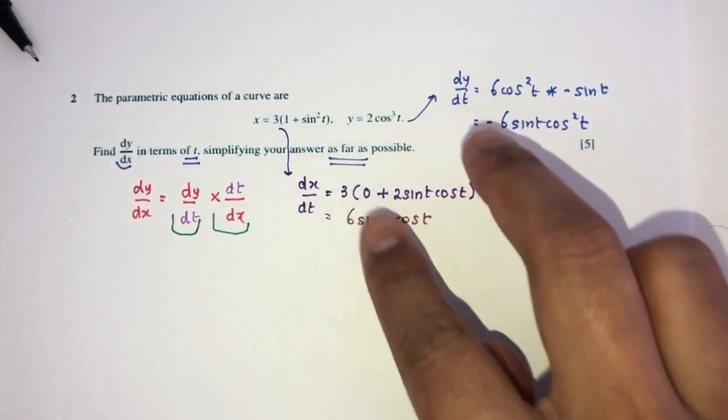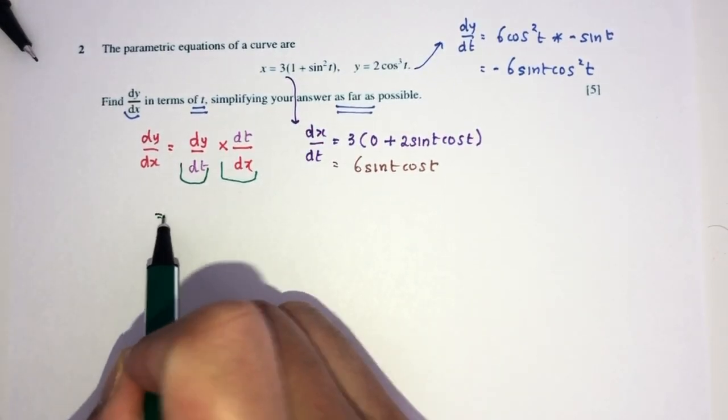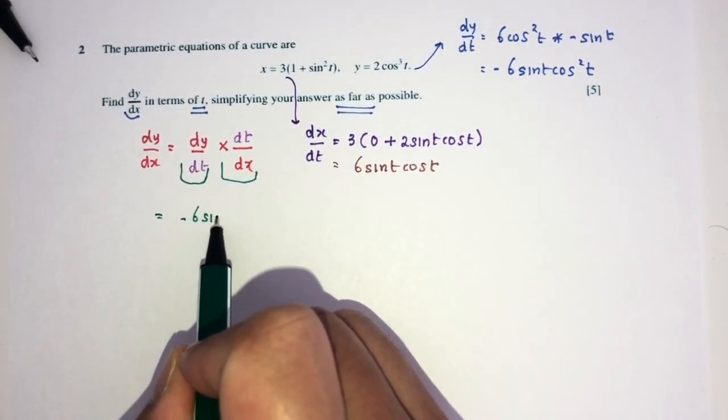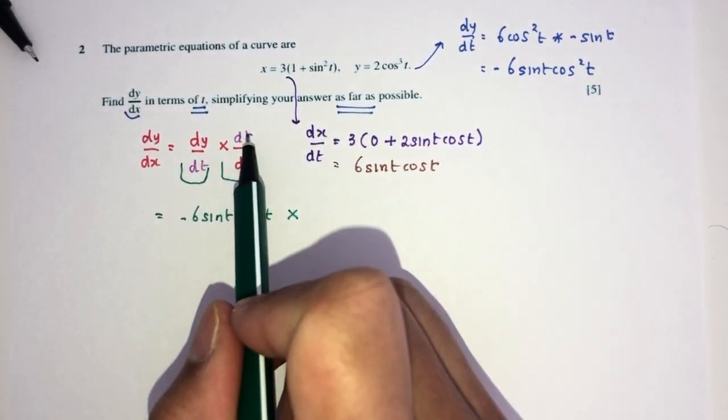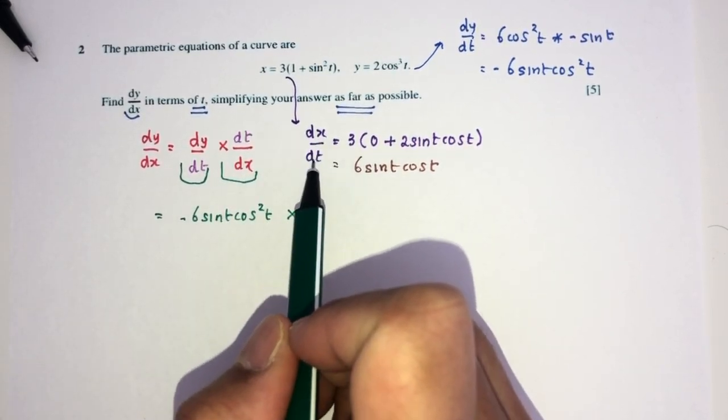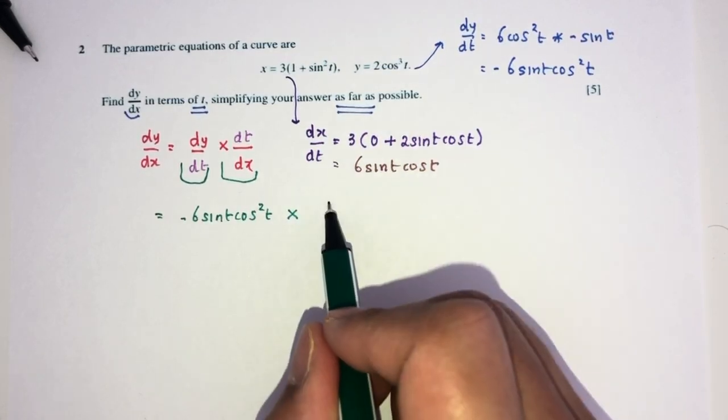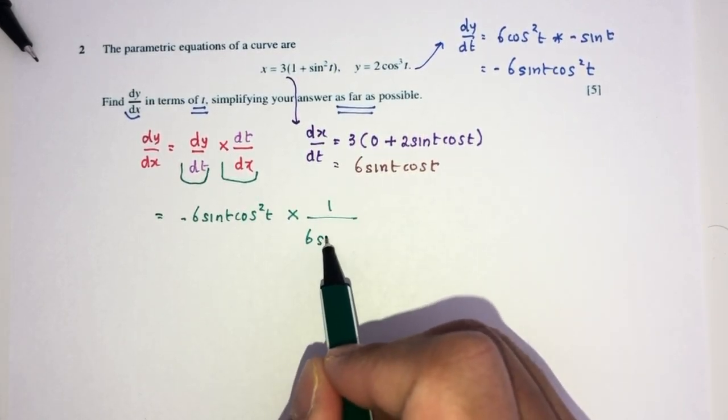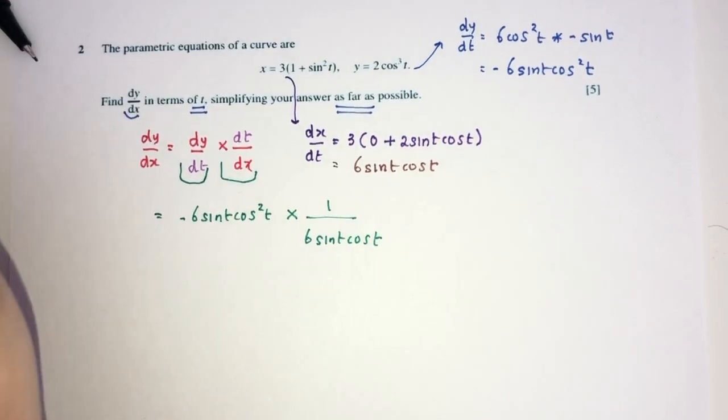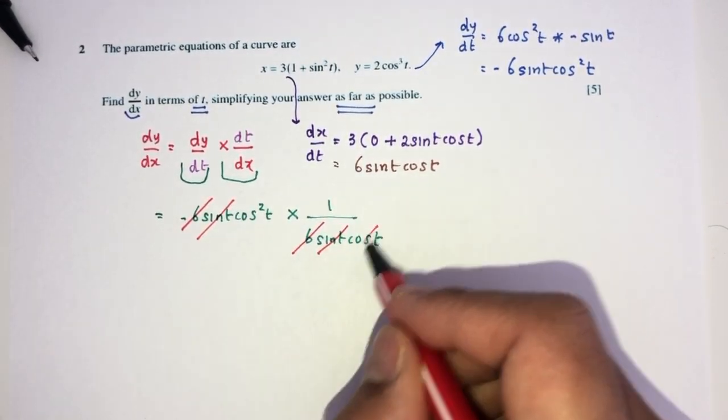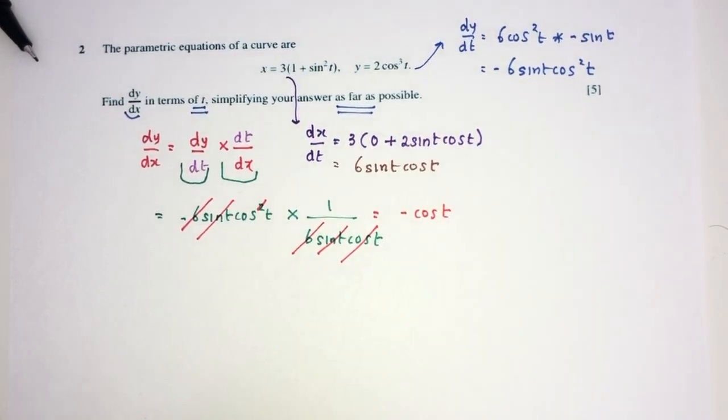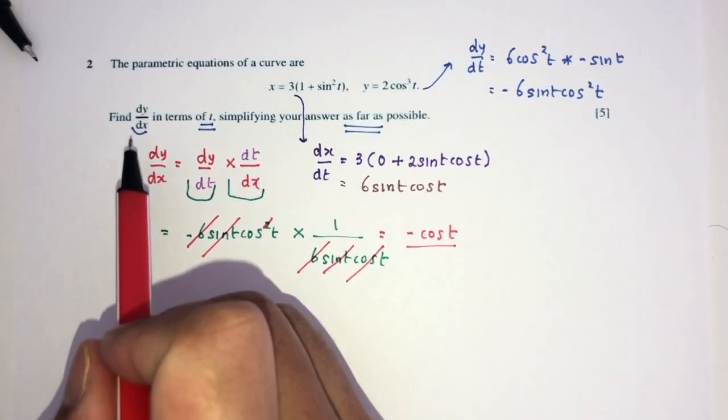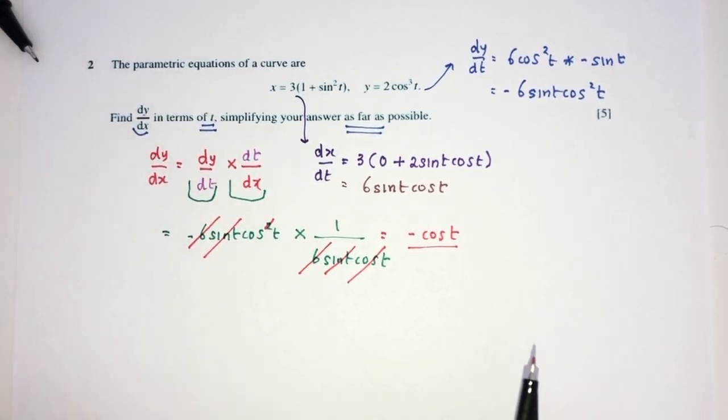Now, once you have those two values, put them back in your main equation. So, there will be dy by dt, which is this one, minus 6 sin t cos square t multiplied by - now, here we have dt over dx. Here we have dx over dt. So, to find this one, we have to flip this upside down. Become 1 over 6 sin t cos t. This will go away. This will go away. And this will go away. So, finally, you have minus cos of t as your answer for dy by dx in terms of t. And this is your question number 2.